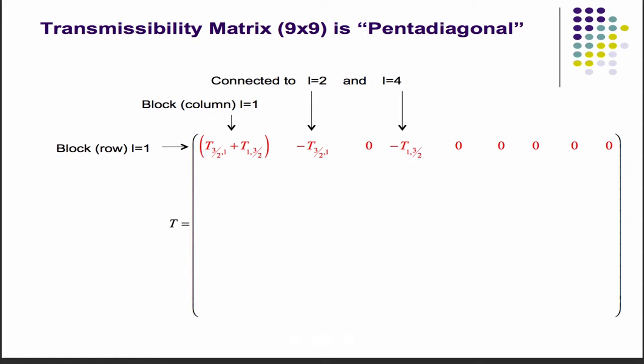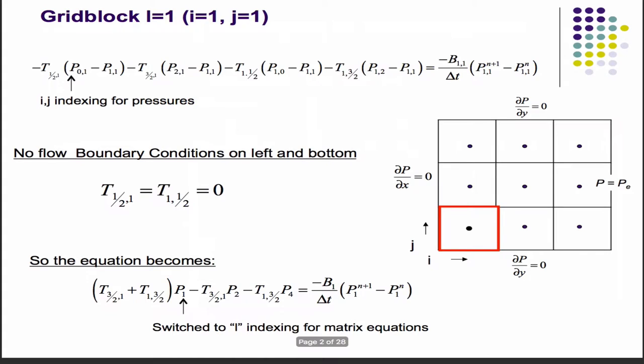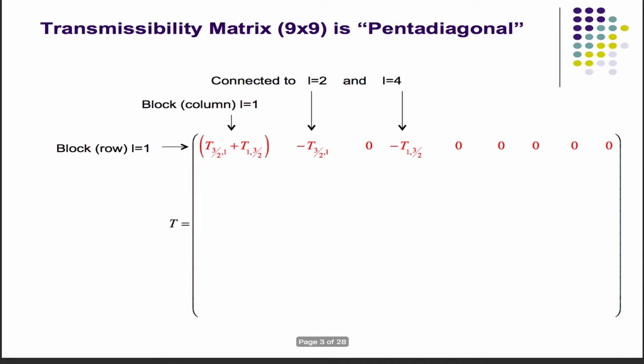That becomes the first row in our stiffness matrix, in our transmissibility matrix. Notice, if it's homogeneous, then you have a 2T on the diagonal. When you have no flow boundary conditions, it's just the number of neighbors. One, two. Two neighbors. Two on the diagonal. So that's a check that you can make.